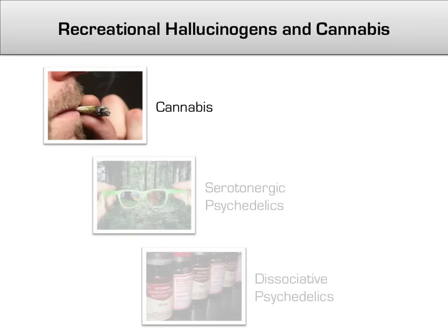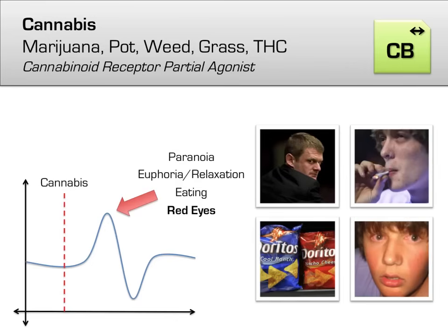Cannabis, also known as THC or simply marijuana, is one of the most famous and widely used psychoactive substances, with over 4% of the world's population having used it at least once in the past year. Historical records of cannabis use date back to at least 3000 BC, and it was likely used even before that. Cannabis has diverse effects, both psychologically and physiologically.